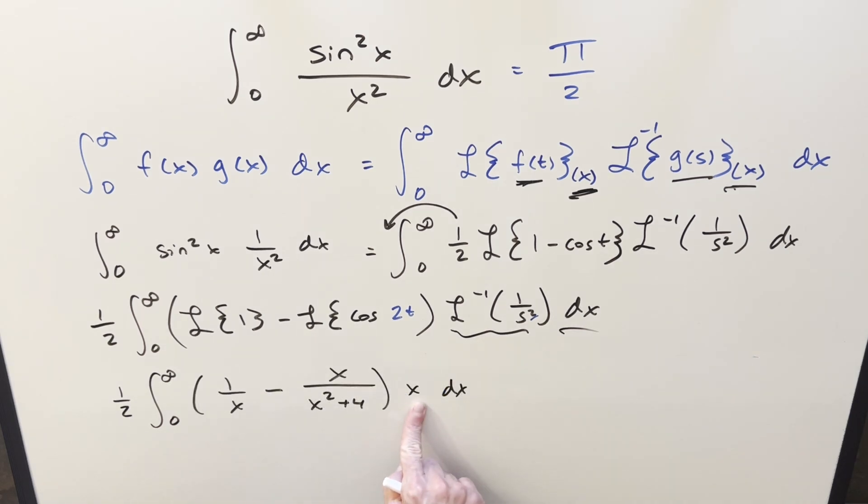But then I could just take this x here and distribute it back into these terms. If I do that over here, this one's going to become x over x, and this one's going to become x squared.